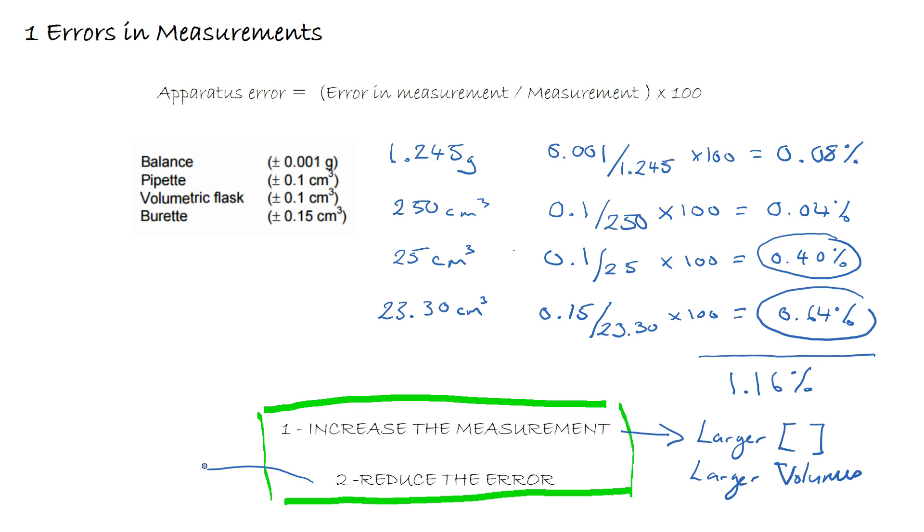To reduce the error, if we had used a measuring cylinder in the first instance, then using a pipette would improve or reduce the error because the pipette is a more precise and accurate piece of equipment. Using a burette would also improve a reaction if you were just using two measuring cylinders. If you're doing a calorimetry experiment, you might find a way of reducing the error by improving the insulation of your flask.